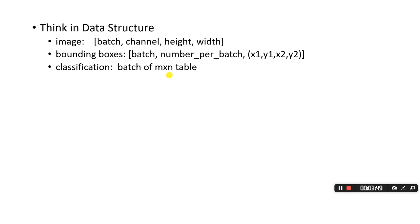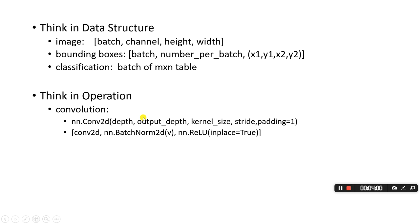You also want to think in terms of operations. For example, when we talk about convolution, what pops into your mind should include input depth, output depth, kernel size, stride, and padding. Input depth and output depth are the most important. Also, convolution is not just convolution — it's combined with batch normalization and some activation like ReLU or leaky ReLU. These three operations are mostly used together.